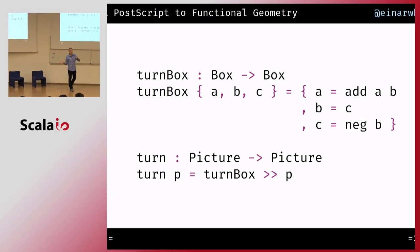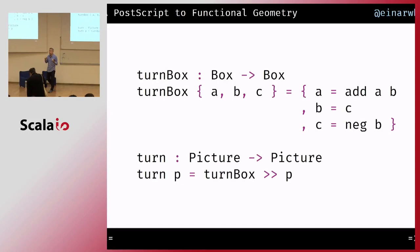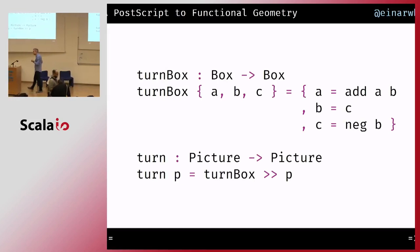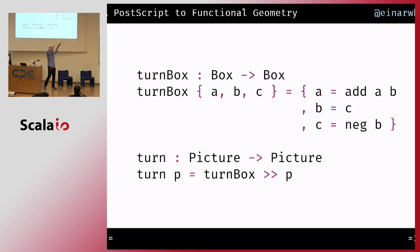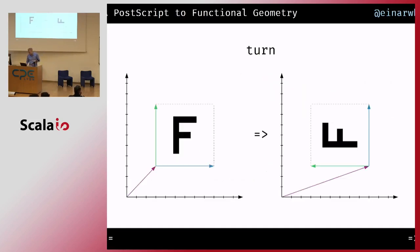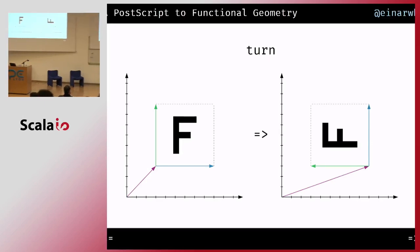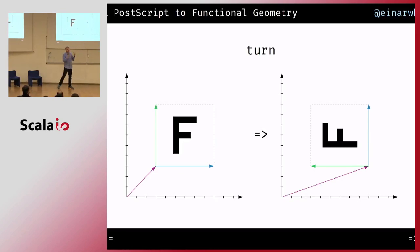Turn is a function from a picture to a picture. Turn-box is a function from a box to a box, and I can use composition of functions to squish these together, because a picture is just a function from a box to a rendering — so they fit together to form another picture. Under the hood, I take the original box, turn it just before passing it to my picture function, and that gives me a new turned picture.